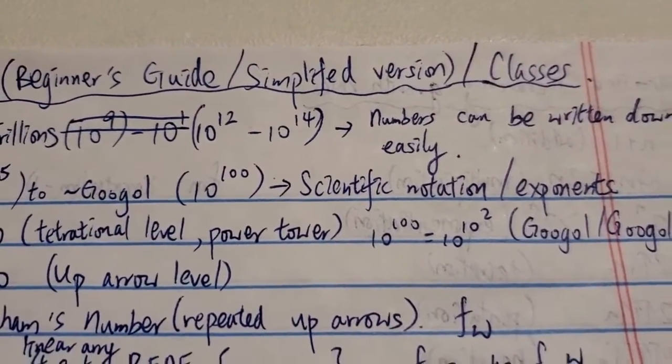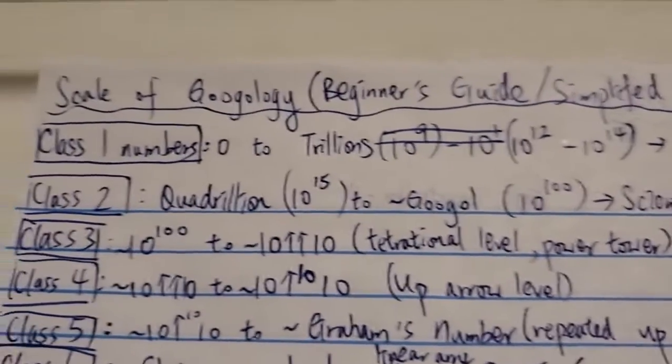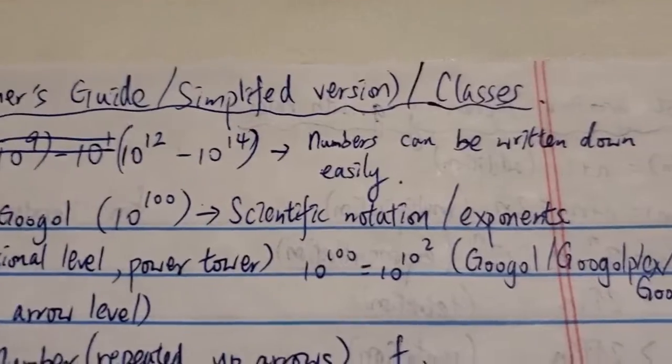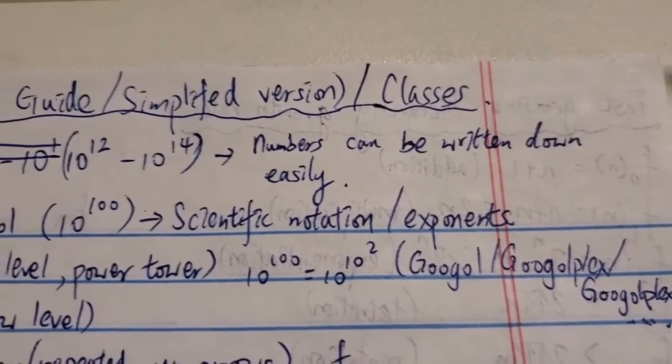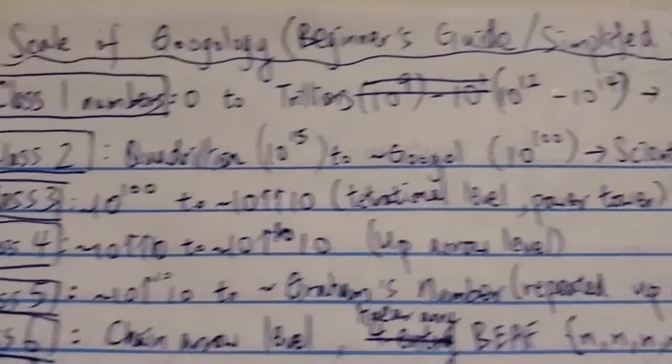These are numbers that cannot be written down easily in full. At Googol, you have to write 100 zeros. So I don't think anyone wants to do that. This class of numbers require scientific notation or exponents to represent.